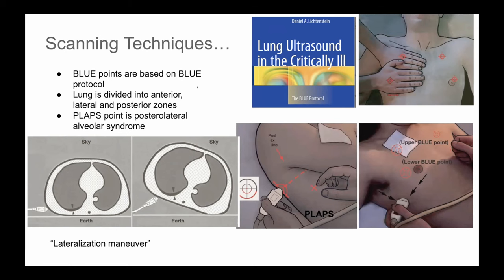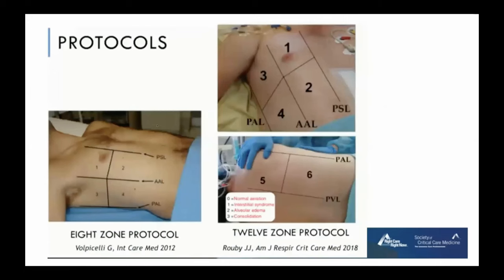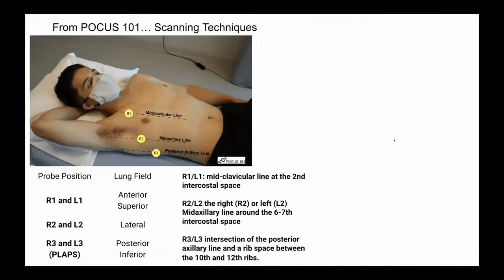There are other techniques as well — the eight-zone and twelve-zone approaches. These require more time but are more comprehensive. Many of us use POCUS-101, which is similar, adapted from the BLUE protocol where we use R1, R2, and R3. R1 is at the upper blue point along the sternum. R2 is where the mid axilla and the phrenic line meet, and R3 is the PLAPS point. These are the locations on the chest we should be scanning.